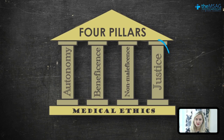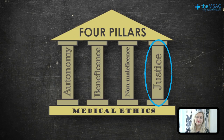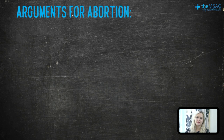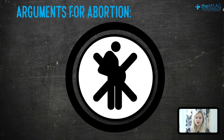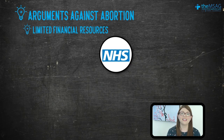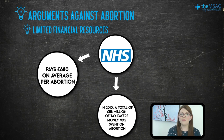This brings me on to justice, our final ethical pillar. Justice means we should treat all equals equally. What about gender equality between men and women? Men can't get pregnant and must never go through the process of pregnancy and childbirth. Therefore, the only way to achieve true gender equality is to allow women the same choice and freedom as men to not be pregnant. Justice also includes distributive justice. Each abortion costs the NHS on average £680. In 2010, the Department of Health reported spending £118 million of taxpayers' money on abortions.